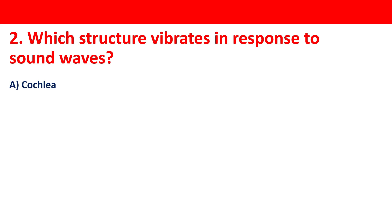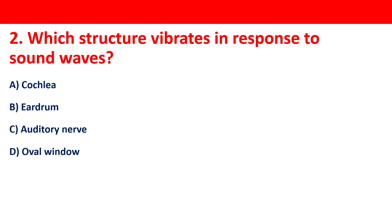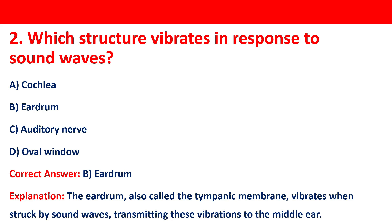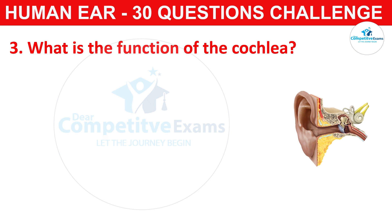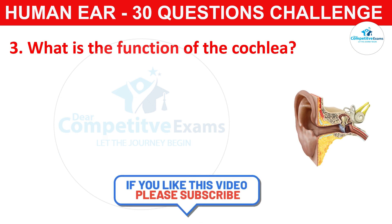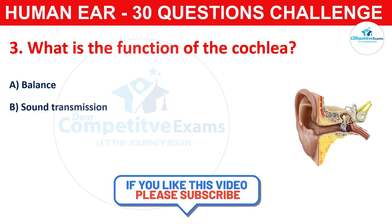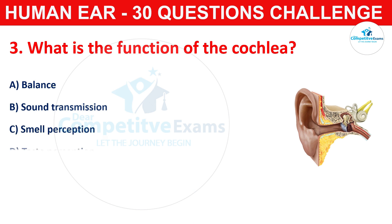Question number two: which structure vibrates in response to sound waves? Your options are cochlea, eardrum, auditory nerve, or oval window. The correct answer is B, that is eardrum. The eardrum, also called the tympanic membrane, vibrates when struck by sound waves, transmitting these vibrations to the middle ear.